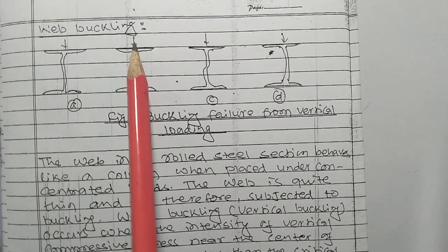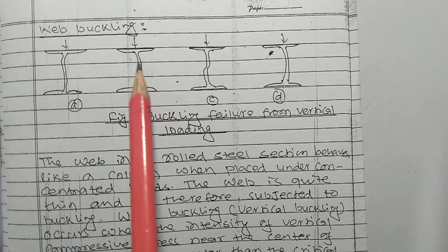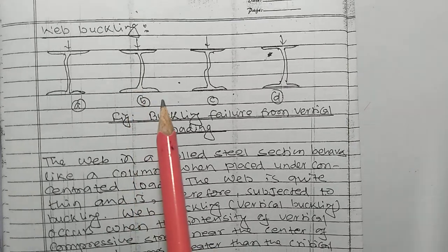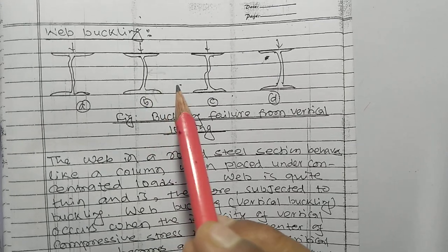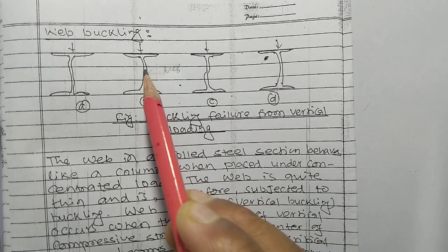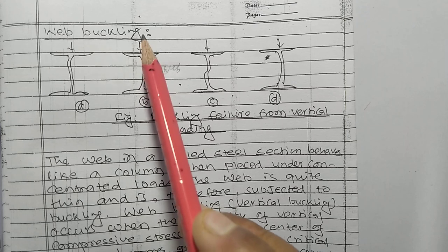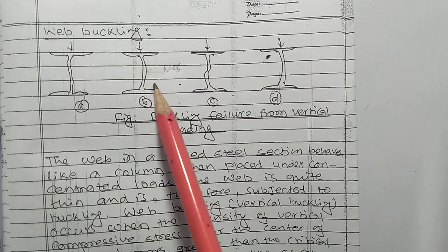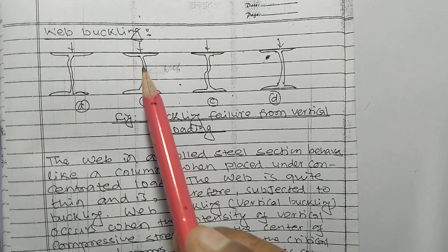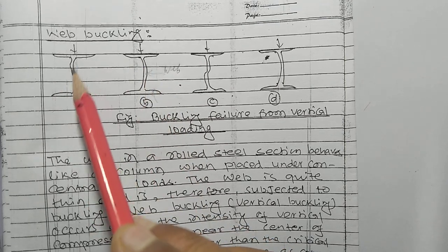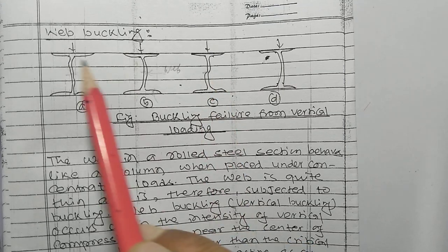You can see here, this is the web buckling. Buckling generally occurs in the middle part of the section. This is the I-section, and the middle part of the I-section is called the web. When load comes from the upper surface, it gets buckled — the web buckles from the middle part, as you can see here. This is all about web buckling.